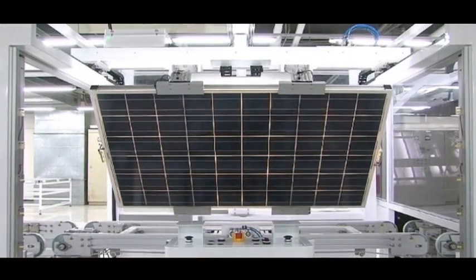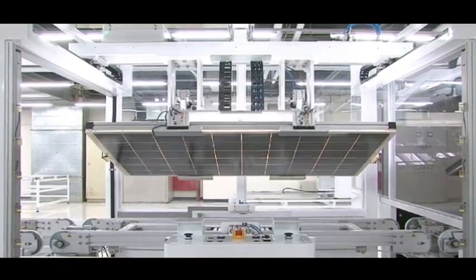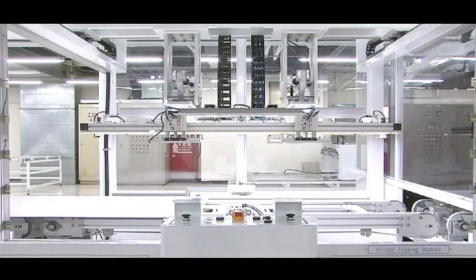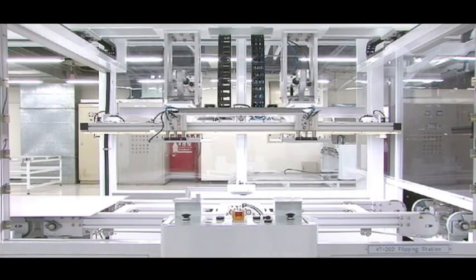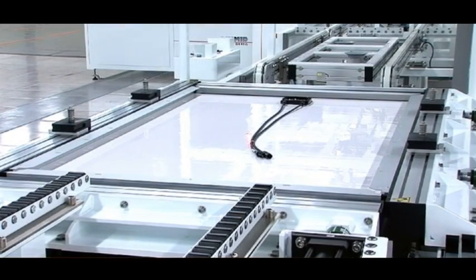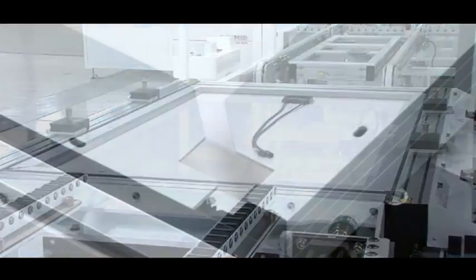The laminate is also inspected visually to detect any incorrect structures. The electroluminescence check is undertaken to avoid subsequent micro-cracks which would reduce performance. This check is similar to an X-ray.